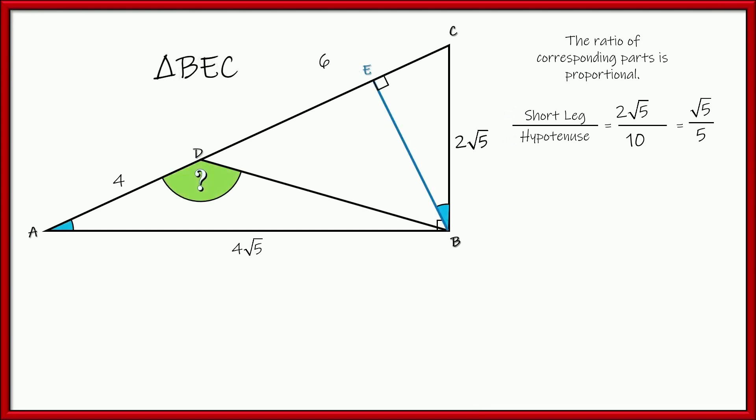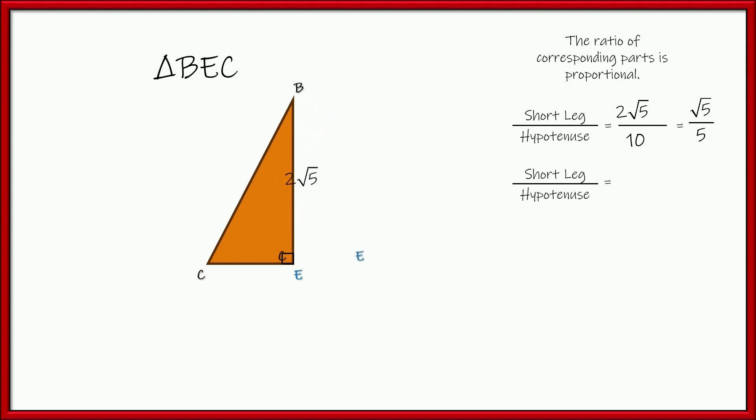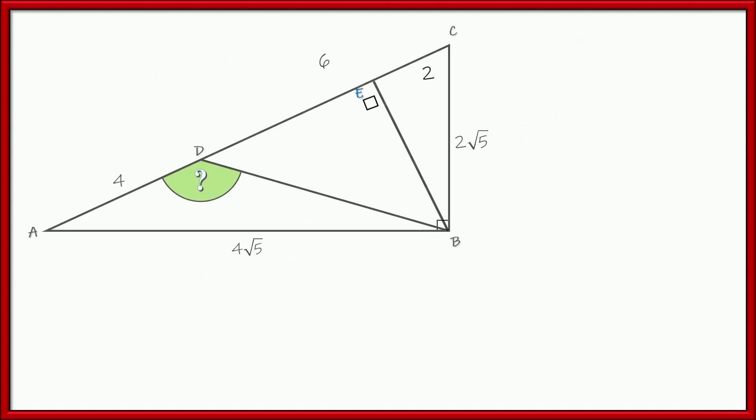So that's going to be the same ratio for our other triangle BEC. BEC is right here. So let's go ahead and zoom in on that one and take a look and see if we can use our proportion right here. So short leg over hypotenuse. Well, I don't know what the short leg is. That's E to C, but the hypotenuse is 2 root 5. So since I know this is the ratio root 5 over 5, I can go ahead and set those things equal. Multiply both sides by 2 root 5 and simplify that. Square root of 5 times the square root of 5 is 5. And the 5s will reduce, leaving us with the short leg is just 2.